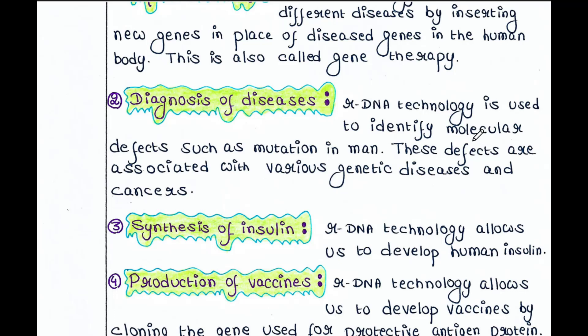Next is diagnosis of diseases. rDNA technology is used to identify molecular defects such as mutations in humans. These defects are associated with various genetic diseases and cancers. If a person has a disease gene due to mutation, you can determine that mutation using the PCR technique. PCR is a part of rDNA technology.